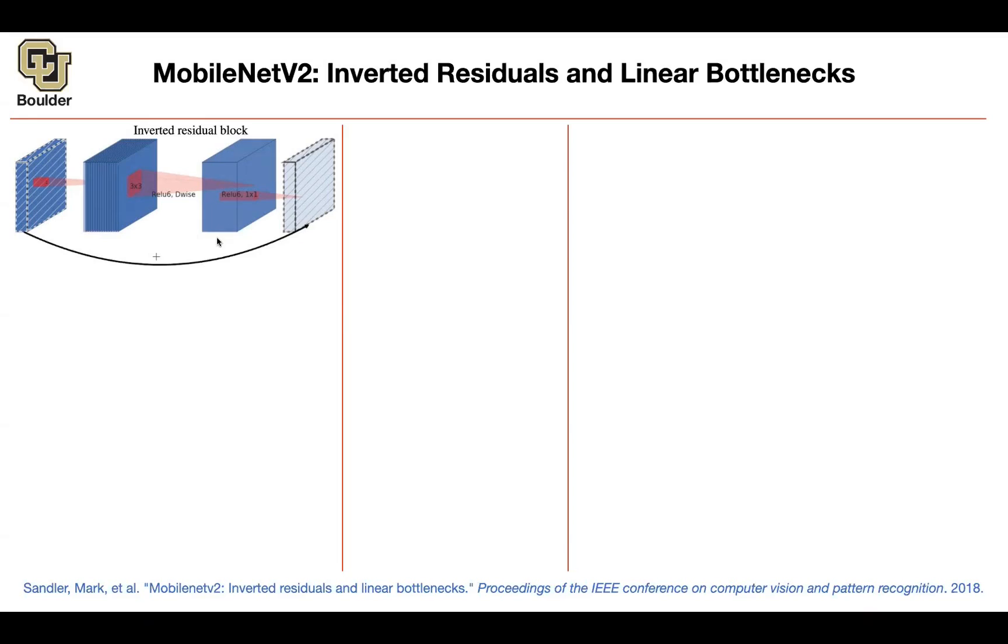These are your expansion layers, or are you going to go from where you had a smaller number of channels and you add a residual connection there? And it turns out comparing different structures, it's better to go from the narrow or your bottleneck to the other bottleneck using your residual connection. So previously it was going from the bigger channel to the bigger channel and that's why they are calling it inverted.